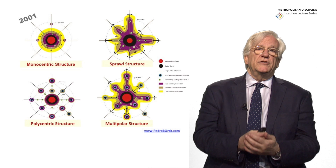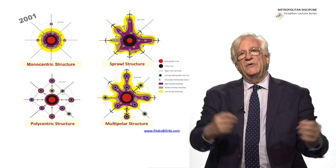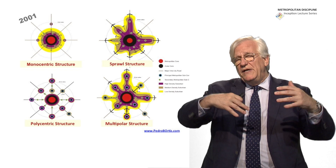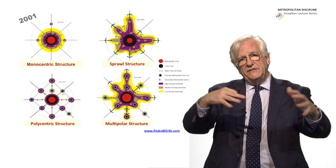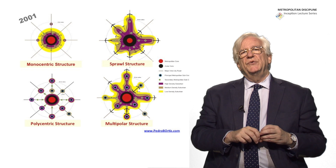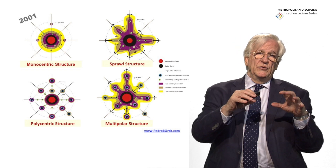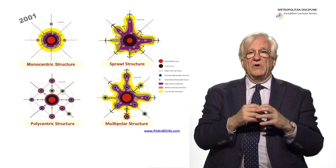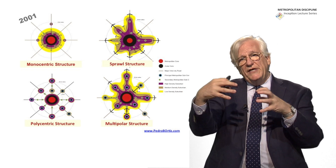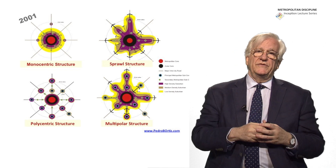The monocentric structure, which is a center that expands in concentric ways; the sprawl structure that goes mainly along transport systems and sprawls into the environment; the multipolar structure that uses different municipalities along those lines to create different poles and centralities; and the polycentric structure.